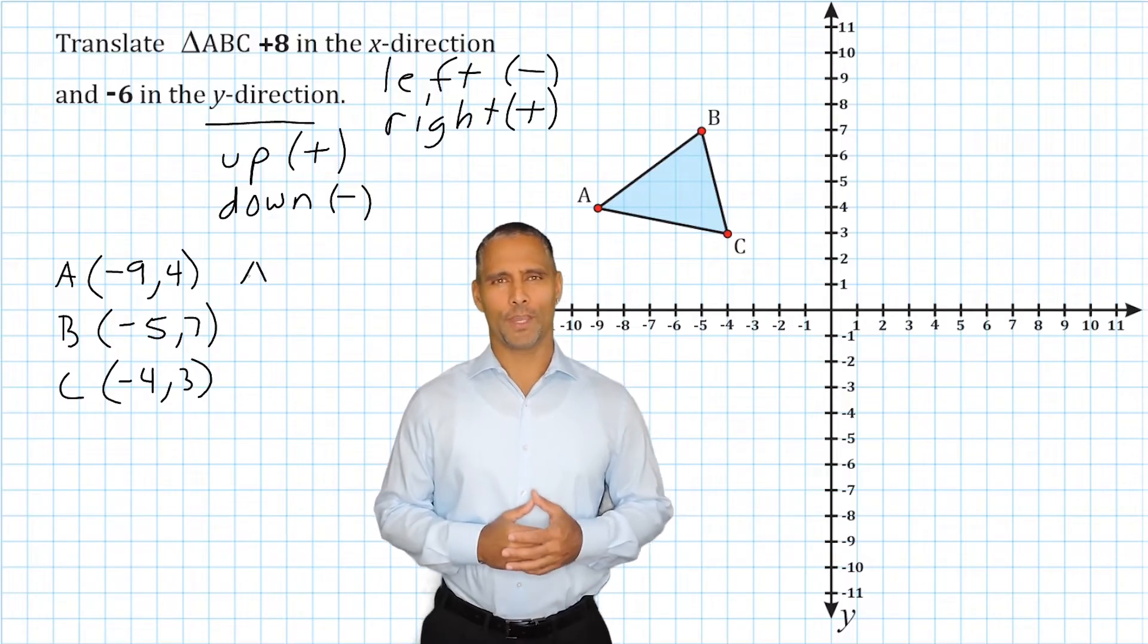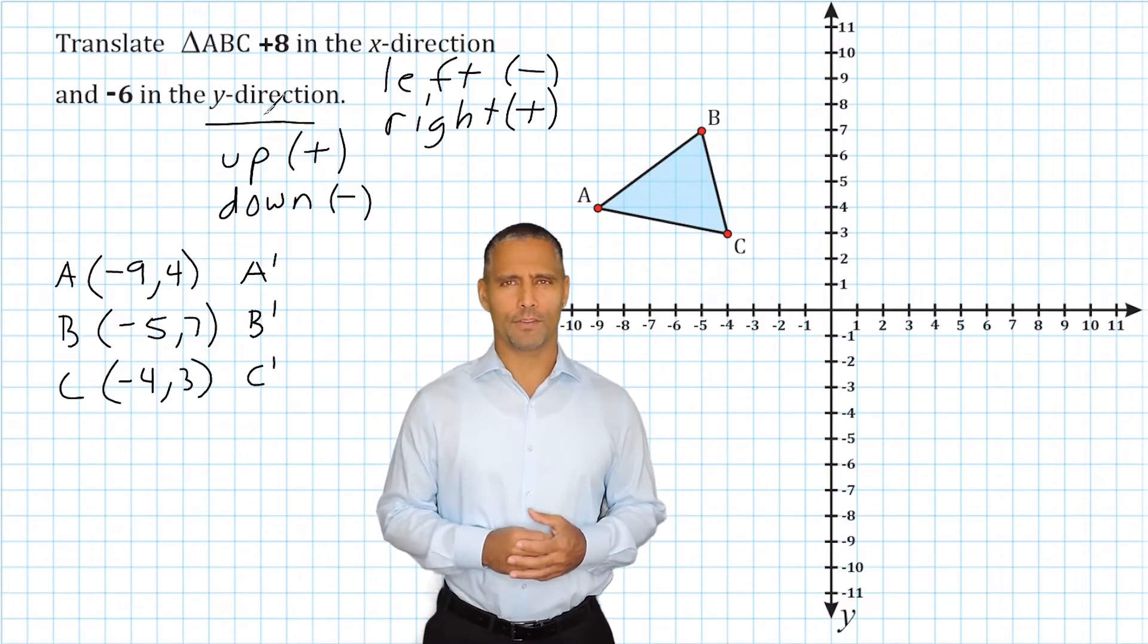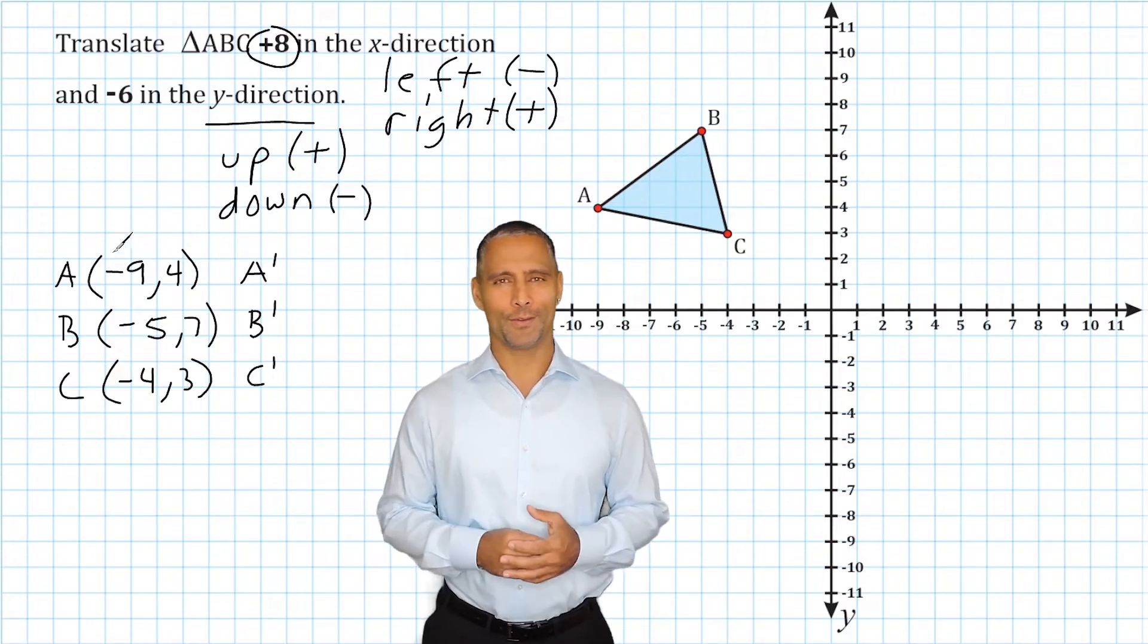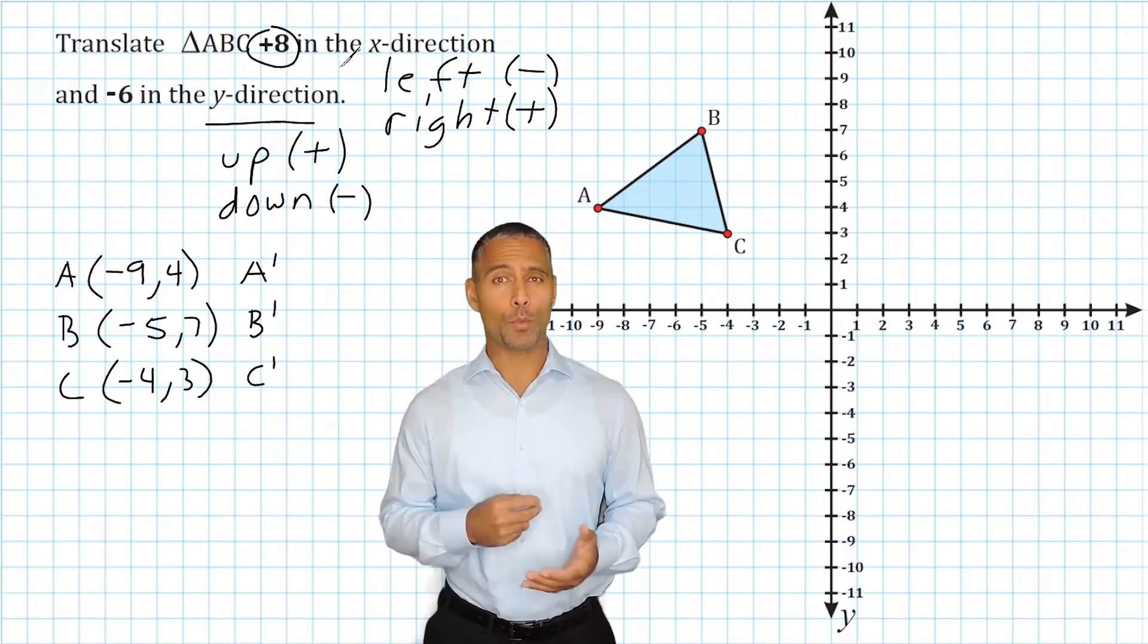Alright. To find the new location of points A, B, and C, what we can do is we can take this positive 8 and we can add that to each one of our x-values. Because the problem states that we have to move positive 8 in the x-direction, we simply add 8 to our x-values.